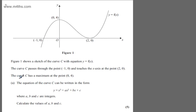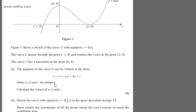In part a, we're told the equation of the curve C can be written in the form y equals x cubed plus ax squared plus bx plus c, where a, b and c are integers. For 5 marks, we're asked to calculate the values of a, b and c.